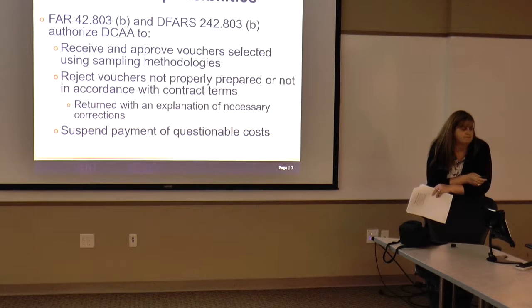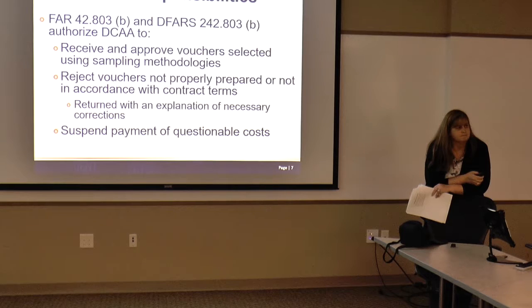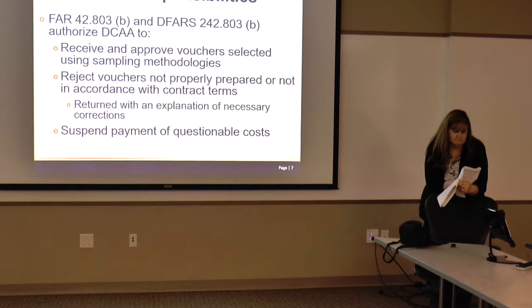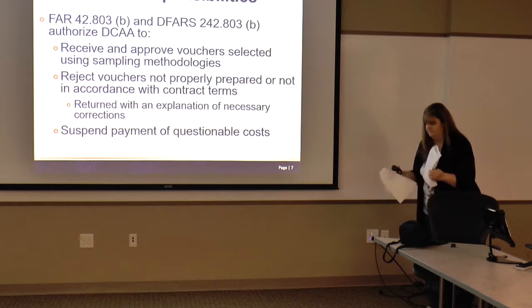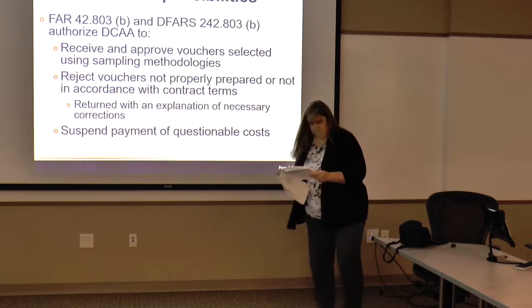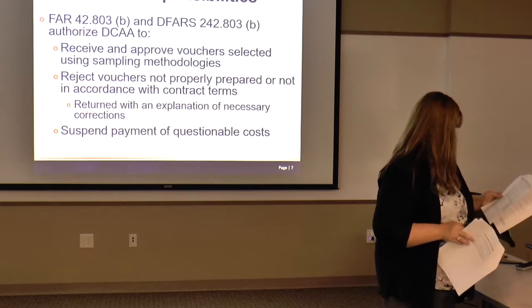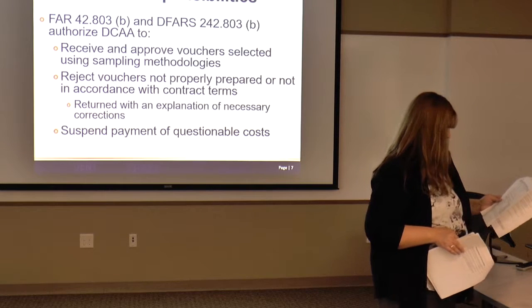For a cost-reimbursable contract, we make sure the cumulative amount billed is within what's funded and within the contract amount. Regarding fee withhold: 15% or $100,000, whichever is less of the fixed fee. The following procedures apply to letter contracts or undefinitized contracts, which we rarely see. Is the voucher in accordance with FAR clause 52.216-26? For labor-hour contracts, if required, has the contractor withheld a percentage of billable costs not to exceed $50,000 per contract?